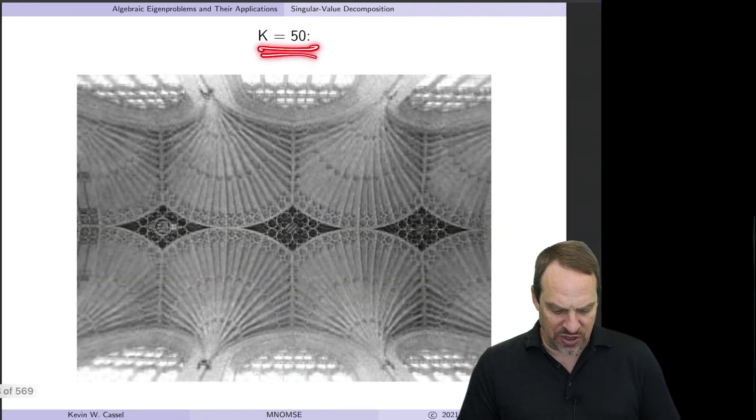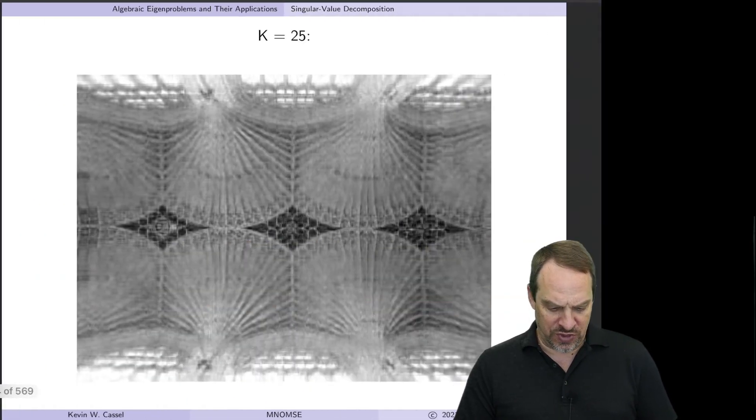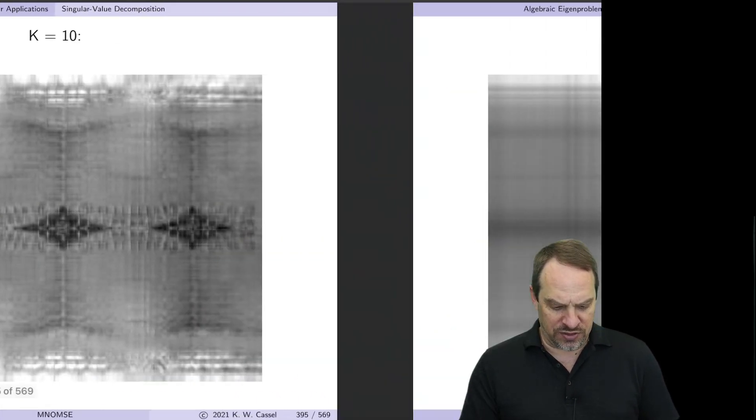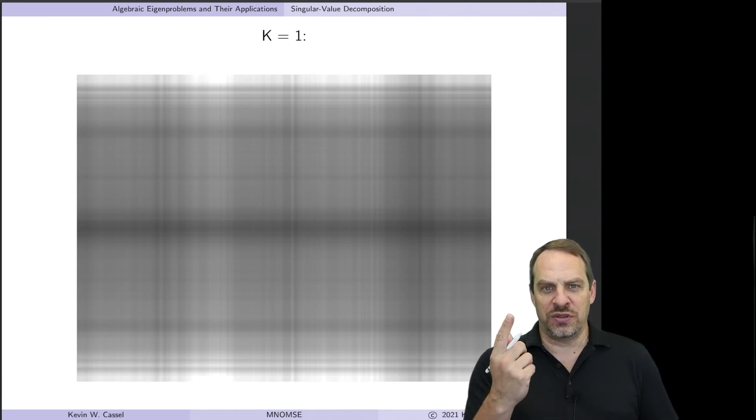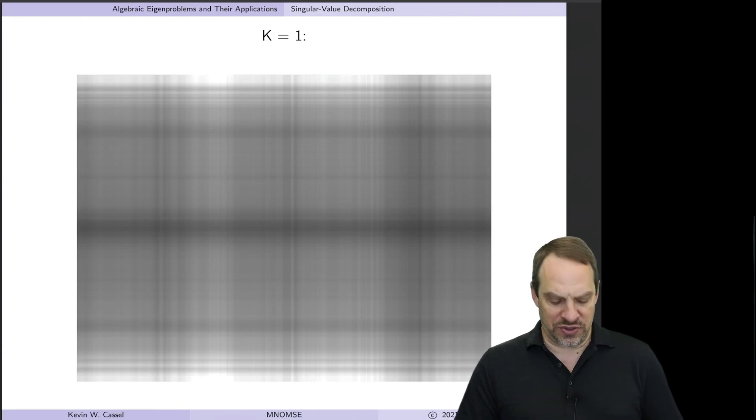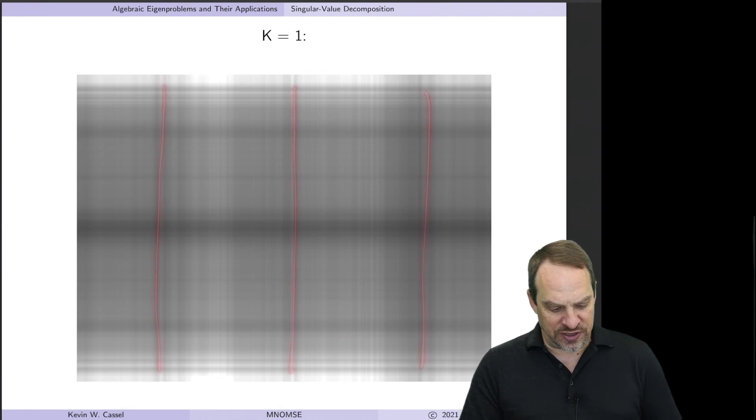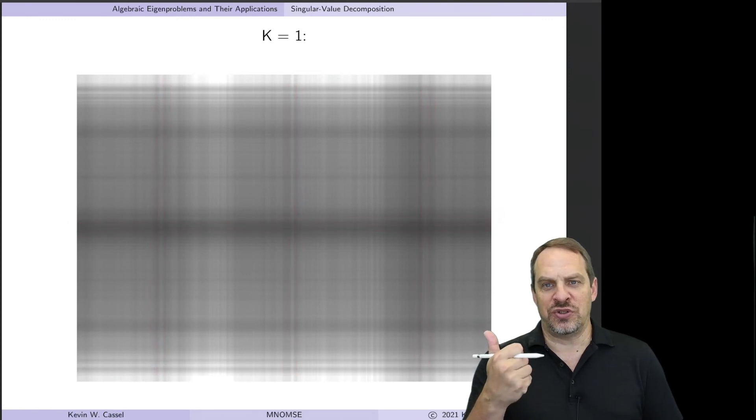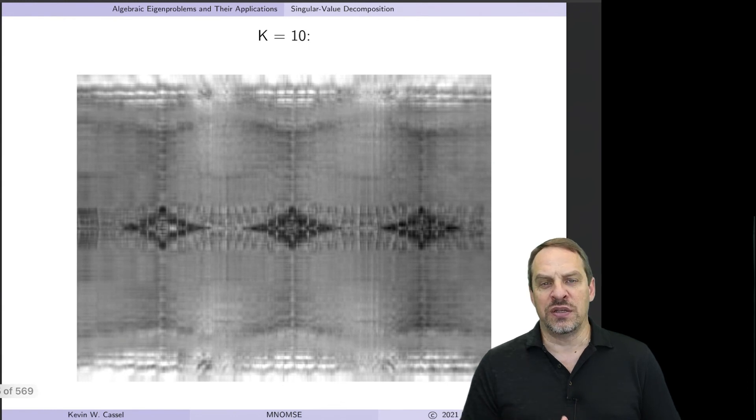If we go down to 50, you can see you lose even more detail, increasingly grainy, but all the features are still recognizable. Here's 25, here's 10, and just for fun, let's try 1. So this is literally one singular value, one left singular vector, and one right singular vector being used to reconstruct the original image, which had millions of pixels. And while this obviously doesn't bear much resemblance to the original image, say you simply wanted to quantify the geometries and sizes of these segments of the ceiling. Just one mode is actually sufficient to do that. You don't need the extra detail that's contained in those additional modes.